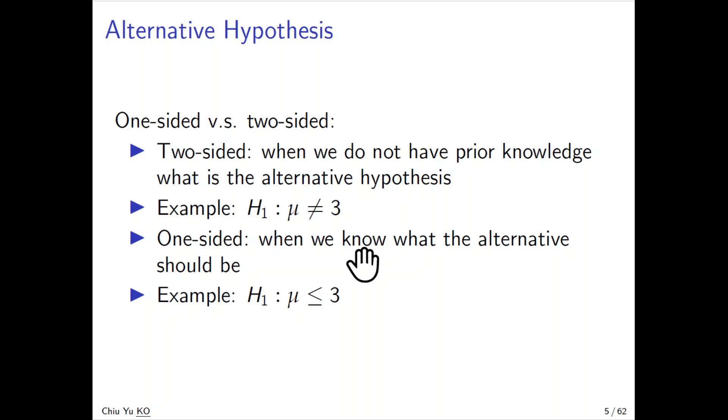The idea to decide which test to use depends on what we want to accept when we reject the null. If we really care about whether the parameter equals a particular value, then we want the alternative to be two-sided. But when we know the other side is more important, then we use a one-sided test.